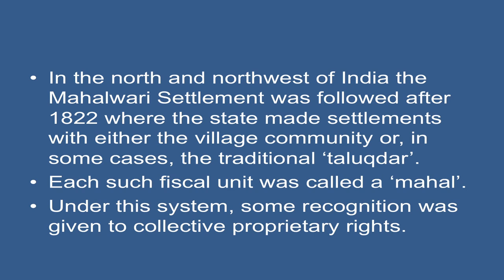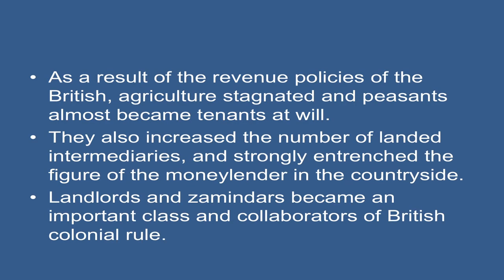In the north and northwest of India, the Mahalwari system was followed after 1822, where the state made settlements with either the village community or, in some cases, the traditional taluqdar. Each unit was called a mahal, and some recognition was given to collective proprietary rights. As a result of the revenue policies of the British, agriculture stagnated and peasants almost became tenants at will. These policies also increased the number of landed intermediaries and strongly entrenched the figure of the moneylender in the countryside.